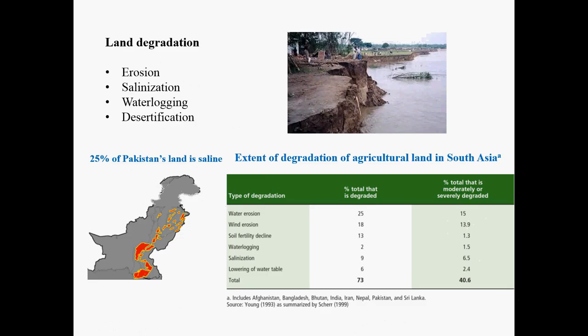You also have a water logging problem. When you put a lot of water into the land, some water may stay in layers within the soil and eventually kill the crops. This happens when there are layers with poor drainage, causing water logging. Another problem is desertification — the expansion of desert-like conditions. On this map, you can see that Pakistan has 25% of its land suffering from salinity problems. This table tells us that 73% of land in South Asia is more or less degraded, and 41% of land in South Asia is moderately and severely degraded. That is really a major problem for the region.